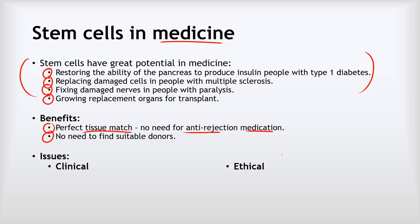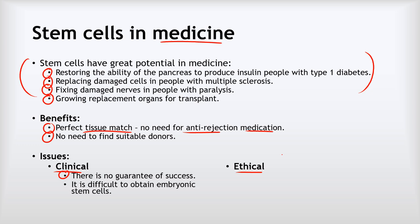There are clinical and ethical issues too. Clinical issues include: no guarantee of success — this is new science we don't yet fully understand; it's very difficult to obtain embryonic stem cells; and there's a possible increase in cancer risk, since stem cells that are very good at growing could potentially start dividing out of control, which is what cancer is.